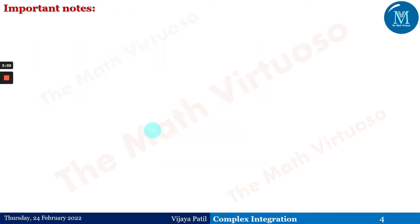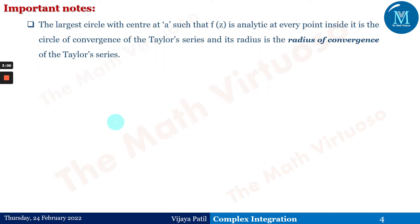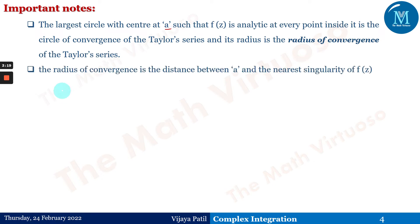An important note: the largest circle with center at 'a' such that f(z) is analytic at every point inside it is the circle of convergence of the Taylor series, and its radius is the radius of convergence. The radius of convergence is the distance between 'a', the center of the circle, and the nearest singularity of f(z).